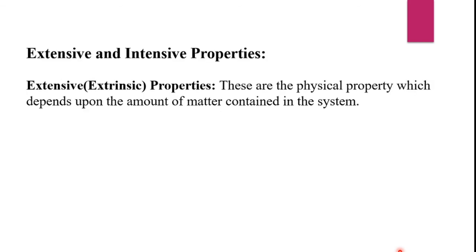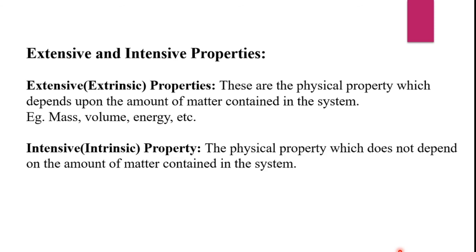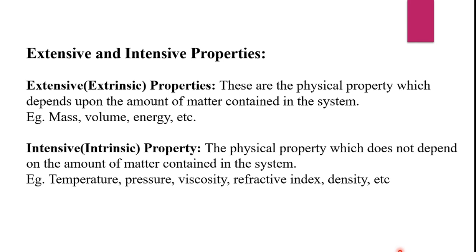Next we are going to study types of property. There are two types: extensive property and intensive property. Extensive property, also known as extrinsic property, is the property which depends upon the amount of matter contained in the system. Examples are mass, volume, and energy. Intensive property, also known as intrinsic property, is the property which does not depend on the amount of matter contained in the system. Examples are temperature, pressure, viscosity, refractive index, and density — all these properties do not depend upon the amount of matter.